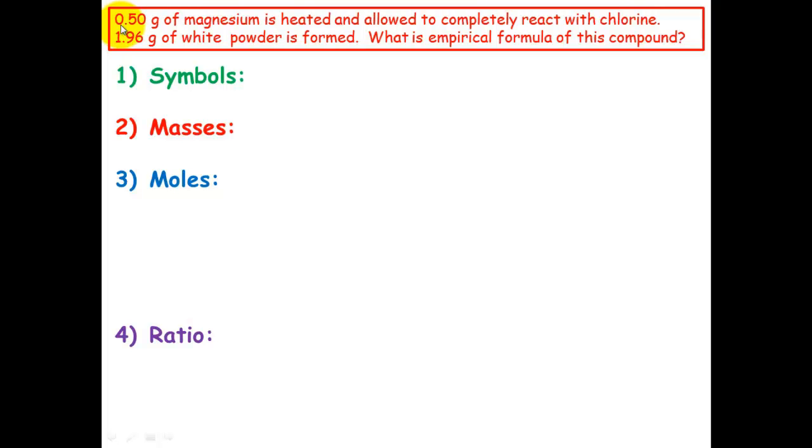Okay, and the next question, which was 0.5 grams of magnesium is heated and allowed to completely react with chlorine. 1.96 grams of white powder is formed. What is the empirical formula? So again, our symbols, magnesium and chlorine. The second thing is we know that the mass of magnesium is 0.50 grams. So 1.96 is the total of the white powder. So 1.96 minus magnesium's contribution, which is 1.46 grams, must be the mass of the chlorine.